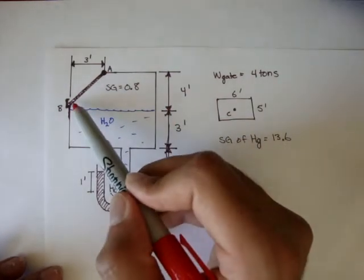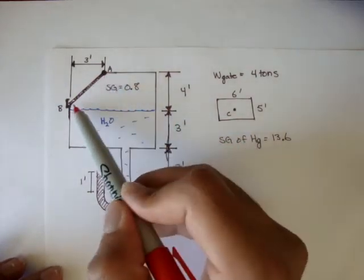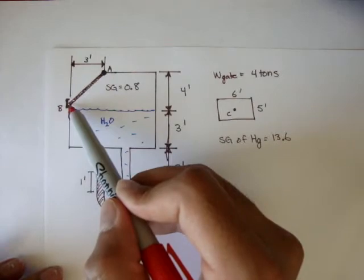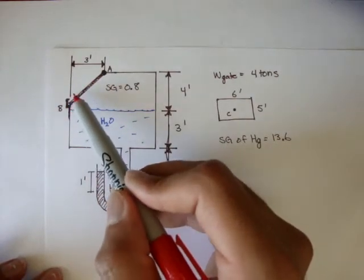The gate here is actually hinged at A, and there's a little stopper here at B pushing towards the gate, keeping it from opening.